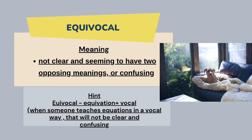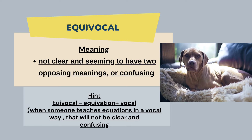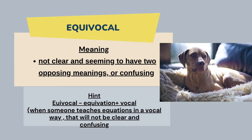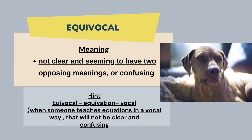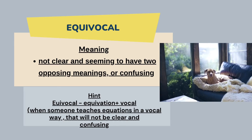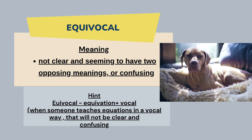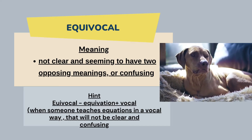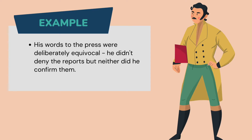Something vague is basically equivocal. The hint to memorize this word is 'equivocal = equation + vocal' — when someone teaches an equation in a vocal way, it will not be clear and will be confusing. Like the expression of this dog — he has some enigmatic or ambiguous expression, so he is basically equivocal. Example: 'His words to the press were deliberately equivocal — he didn't deny the reports but neither did he confirm them,' meaning he had some vague or ambiguous point of view.